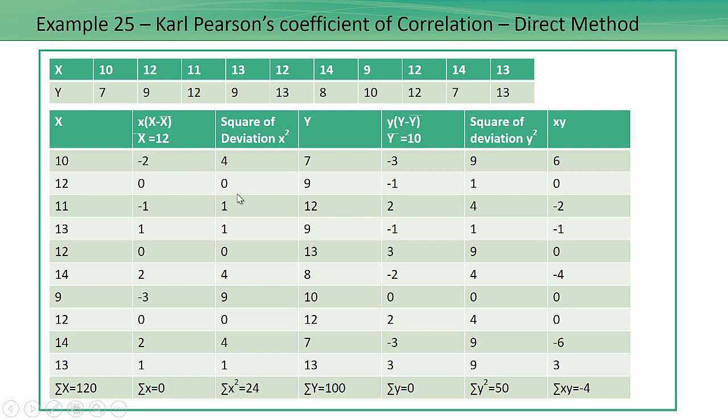Now let us find out the square of deviation, which is small x squared. That is: 2 squared is 4, 0 squared is 0, minus 1 squared is 1, and so on. If you do the summation you will get summation of small x squared equal to 24. Similarly, we will find this out for Y. We already know Y-bar is equal to 10.